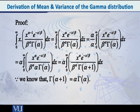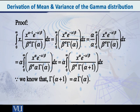The next step is to combine the x we wrote in front with x raised to alpha minus 1. When we combine them, x raised to alpha minus 1 plus 1 gives us x raised to alpha. After this, we do one interesting step: we multiply and divide this integral by alpha. Multiplying and dividing by the same value does not change anything.